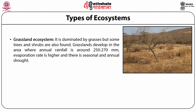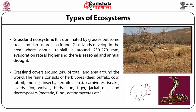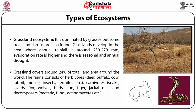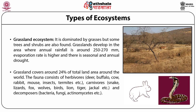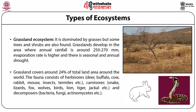Grassland ecosystem is dominated by grasses, but some trees and shrubs are also found. Grasslands develop in areas where annual rainfall is around 250 to 270 mm, evaporation rate is higher, and there is seasonal and annual drought. Grassland covers around 24% of total land area around the world. The fauna consists of herbivores such as deer, buffalo, cow, rabbit, mouse, insects, termites, etc.; carnivores like snake, lizard, fox, wolves, birds, lion, tiger, jackal, etc.; and decomposers like bacteria, fungi, actinomycetes, etc.